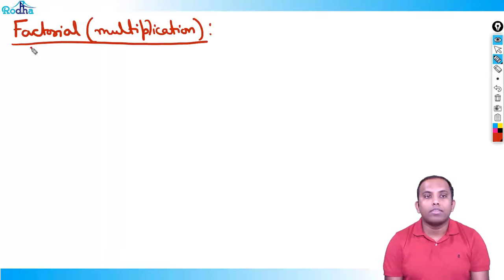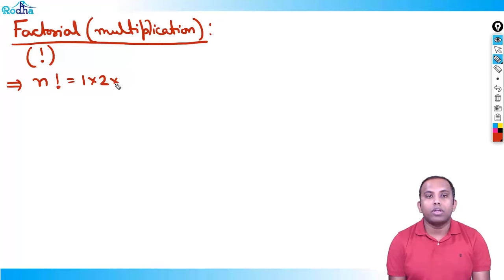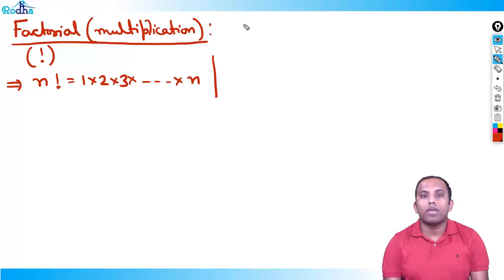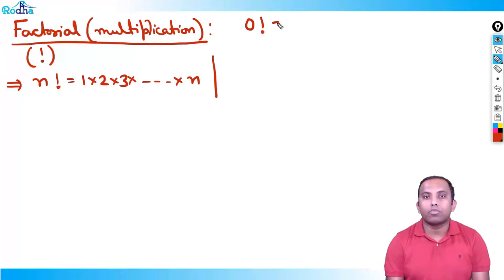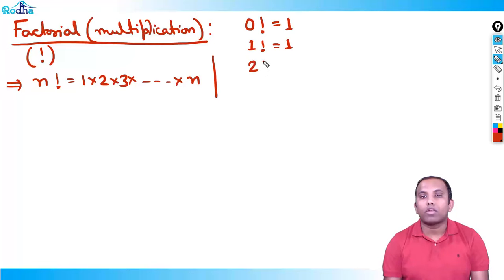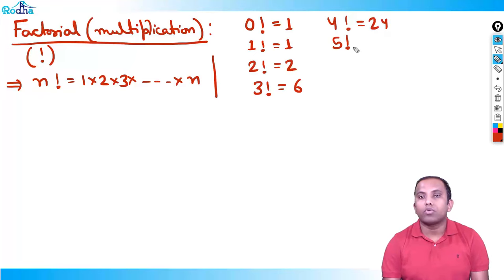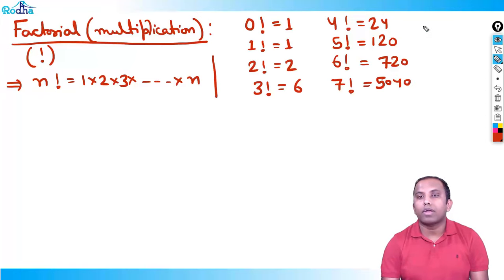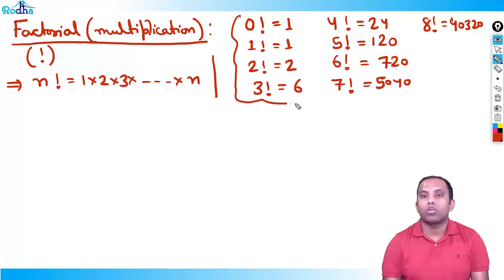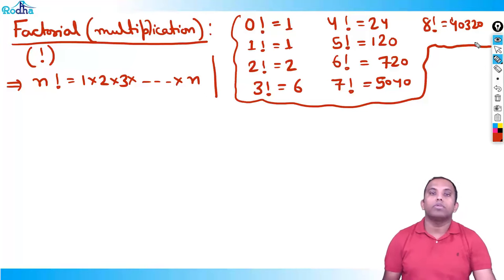Factorial: the sign is '!'. n factorial equals 1 × 2 × 3 × ... × n. You should remember these values: 0! = 1, 1! = 1, 2! = 2, 3! = 6, 4! = 24, 5! = 120, 6! = 720, 7! = 5040, 8! = 40320. In permutations and combinations, you should solve fast, so remember these factorial values.